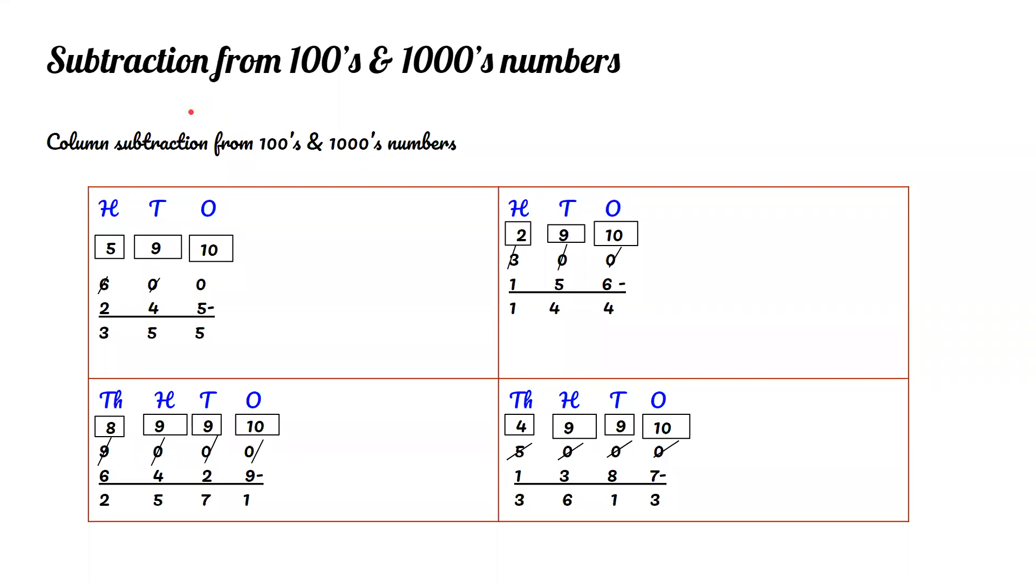Subtraction from hundreds and thousands numbers. 600 minus 245. Since the 0 in the ones place is less than the 5, we go to the tens place. And also here, the 0 is less than the 4. Again, we move to the hundreds place. We make the 6 a 5 and the 0 in the tens place a 10. But we also need to, since the 0 in the ones place is less than 5, we need to make the 10 a 9 and the 0 in the ones place a 10. 10 minus 5 equals 5. 9 minus 4 equals 5. 5 minus 2 equals 3. So the answer is 355.